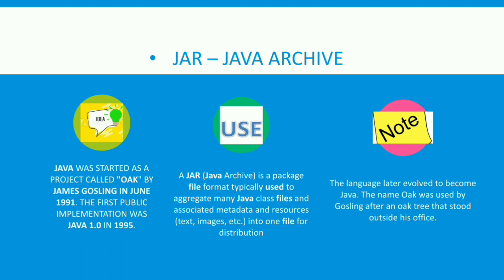The fifth topic is JAR — Java Archive. Java was started as a project called Oak by James Gosling in June 1991, and the first public implementation was Java 1.0 in 1995. Java Archive is a package file format typically used to aggregate many Java class files and associated metadata and resources like text and images into one file for distribution.